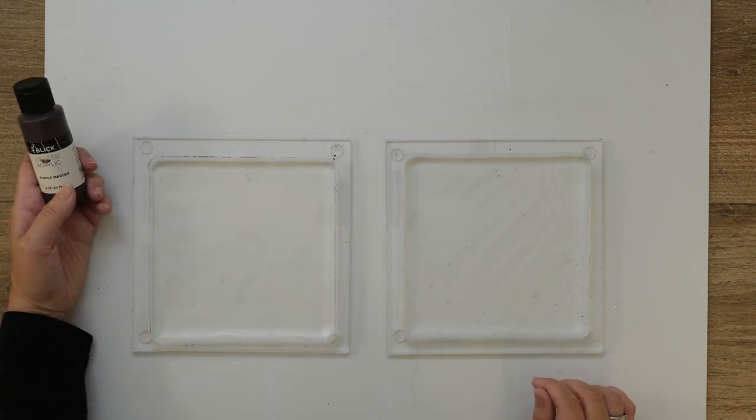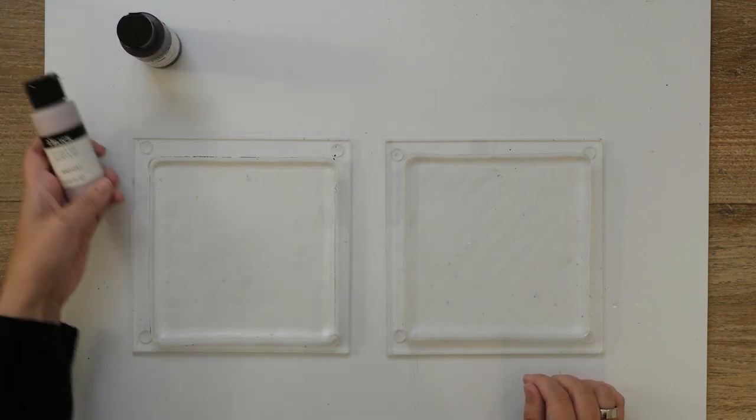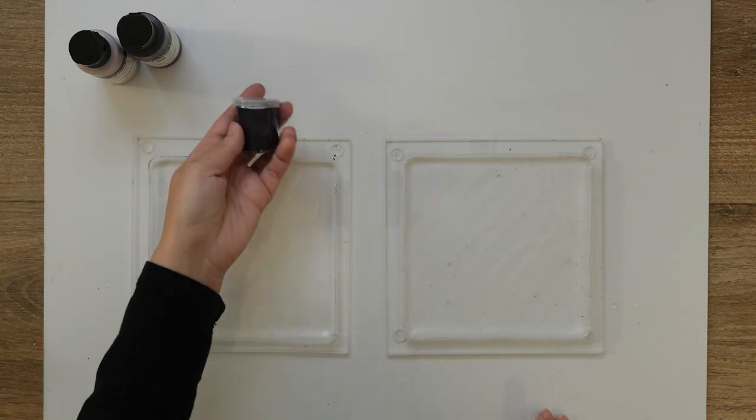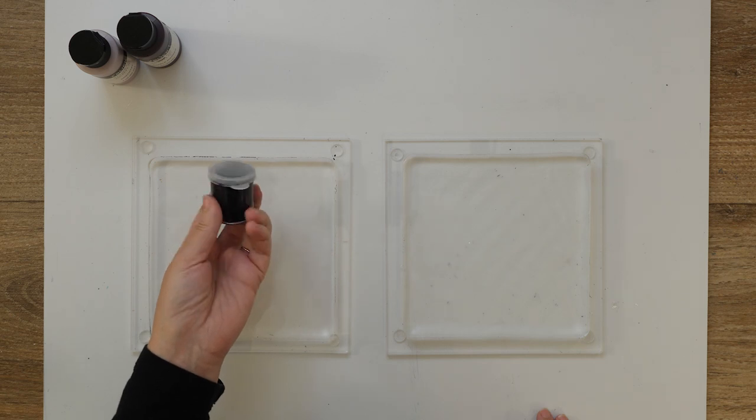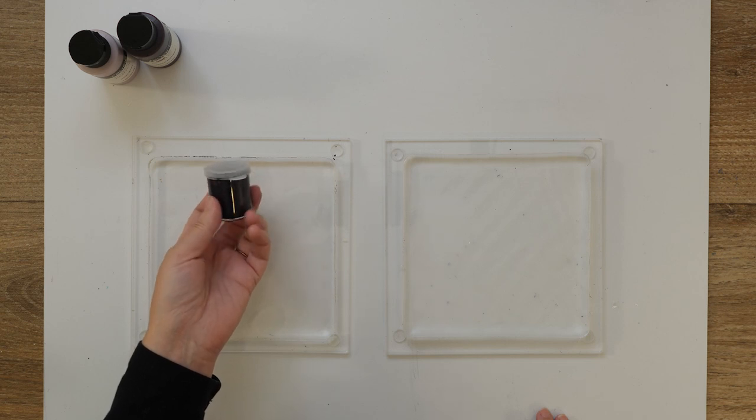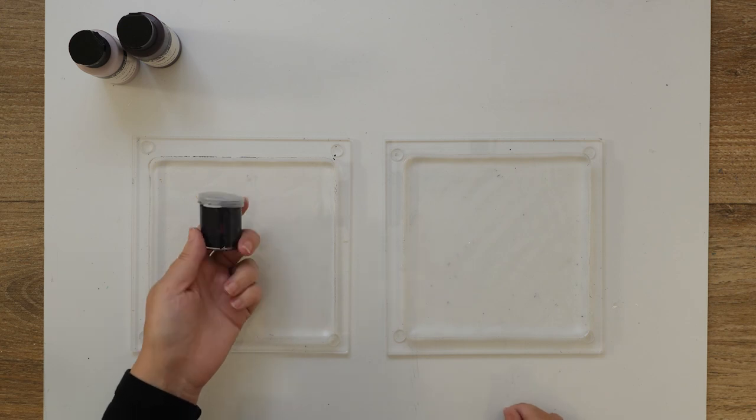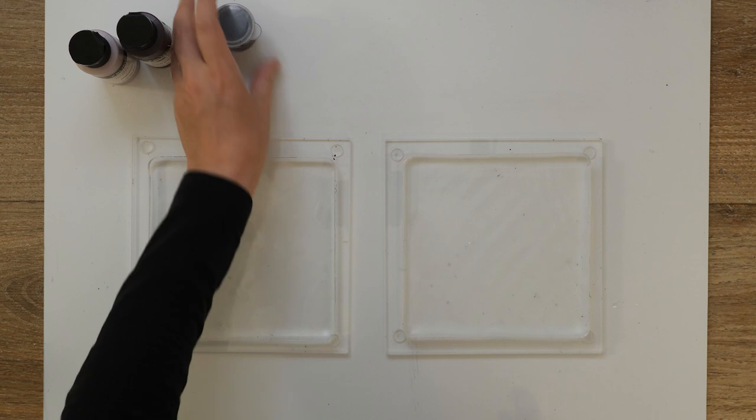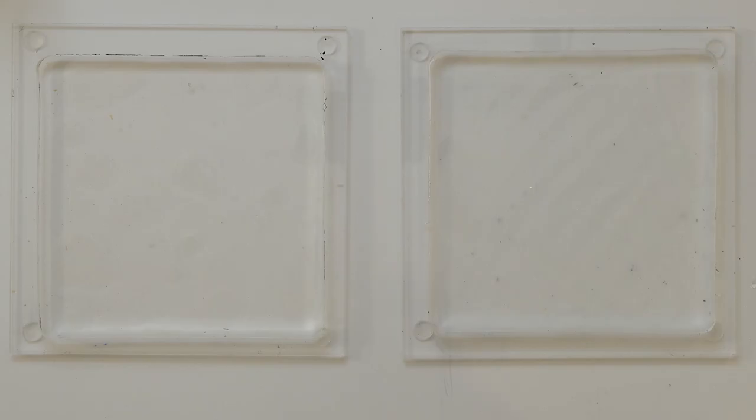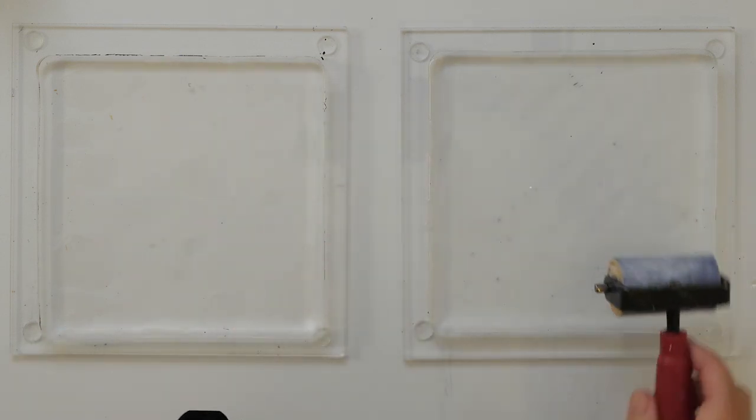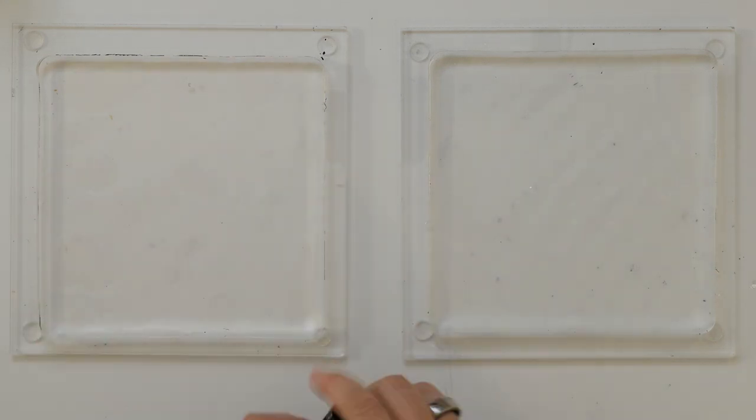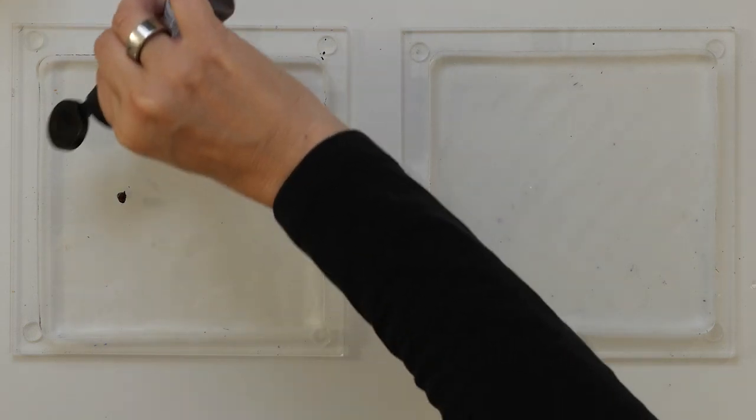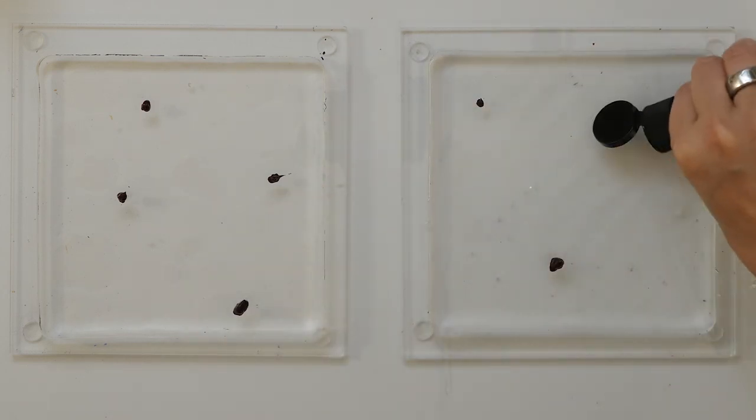I'm going to work with my Blick matte acrylics. This is purple matter, and I'm going to use amethyst as well. I'm thinking that maybe I also want to use this paint I mixed myself from Amsterdam standard acrylics. I'd like to have a bit of a darker touch. I'm going to use a small brayer so I can work more locally because I want to use multiple colors but don't want to mix them completely.